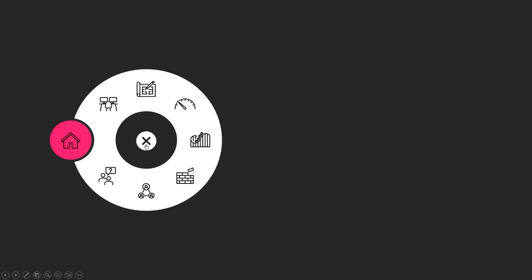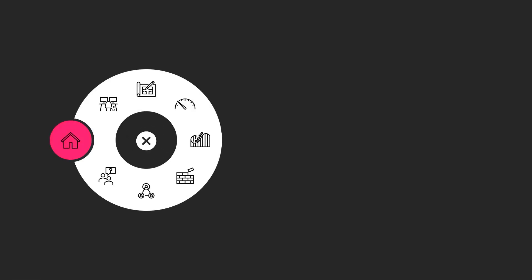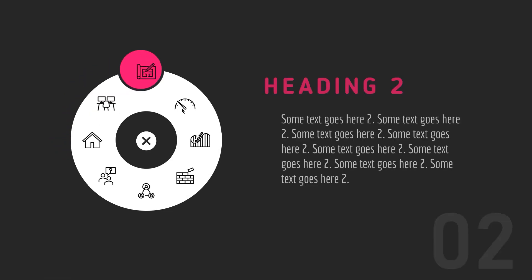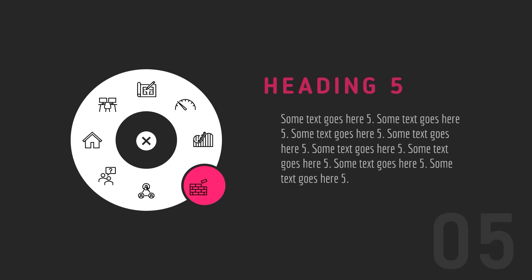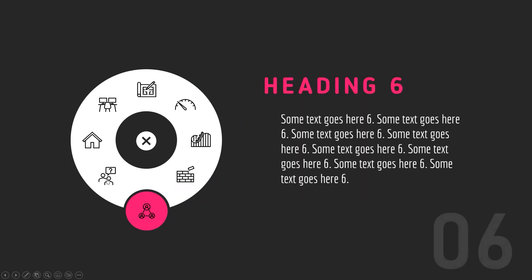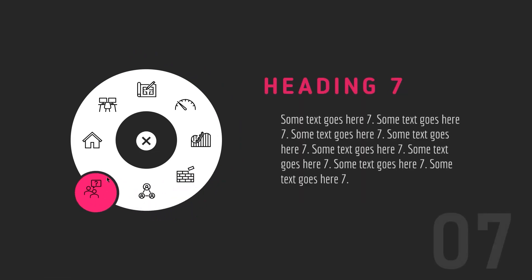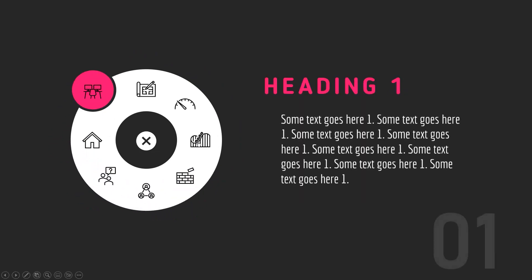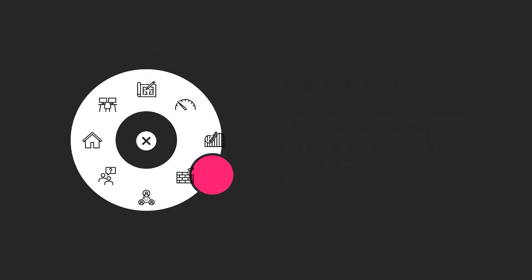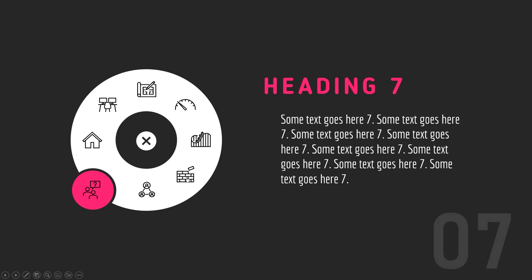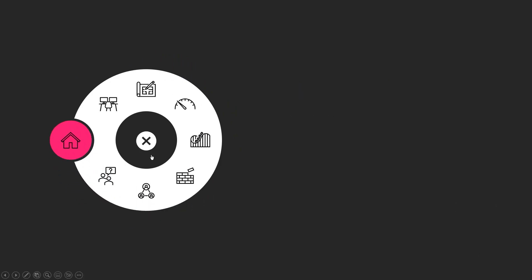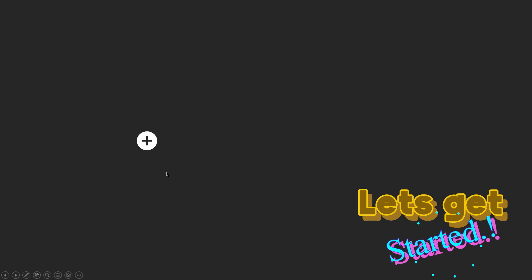Hello PowerPoint users and welcome back to my channel. In this video, we are going to create this animated circular navigation menu using morph transition in PowerPoint. As you can see, the pink color circle shape perfectly moves along the circumference of the big circle and I will tell all the tricks to achieve it. Please watch this video completely to understand all the important steps and get ready to amaze your friends and colleagues. So let's get started.